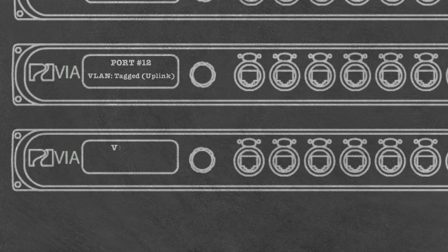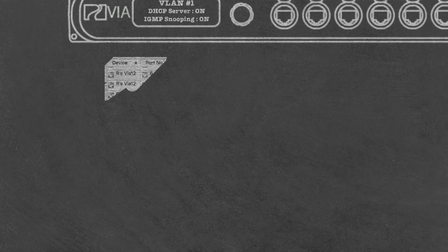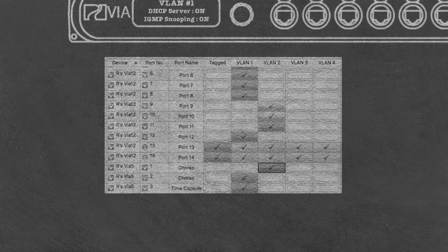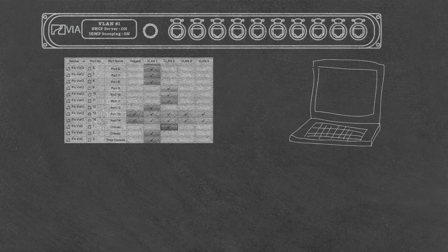Each VLAN can have its own DHCP server and IGMP snooper set up through the front panel, or using Passgate on a PC to manage your VLAN network with a more graphical interface. When connecting your PC, just make sure you plug into a port assigned to VLAN 1, the default management VLAN.